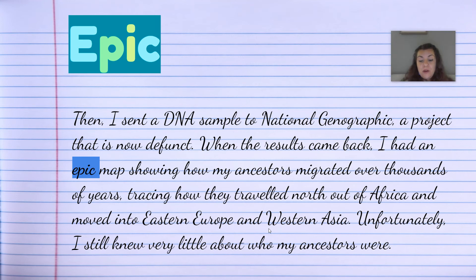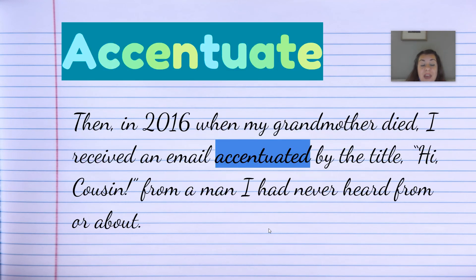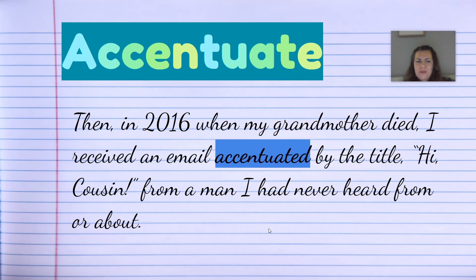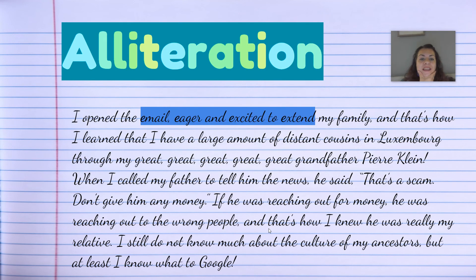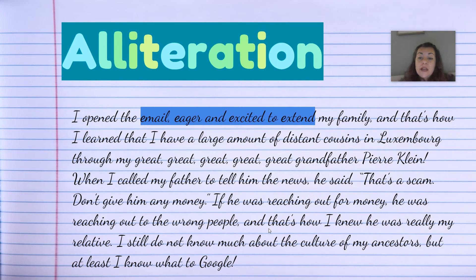'Unfortunately, I still knew very little about who my ancestors were. Then in 2016, when my grandmother died, I received an email accentuated by the title: hi cousin, from a man I had never heard from or about.' I opened the email eager and excited to extend my family. There's my alliteration: email, eager, excited, extend. I used alliteration. I could have stopped there, but I decided to wrap up my story.